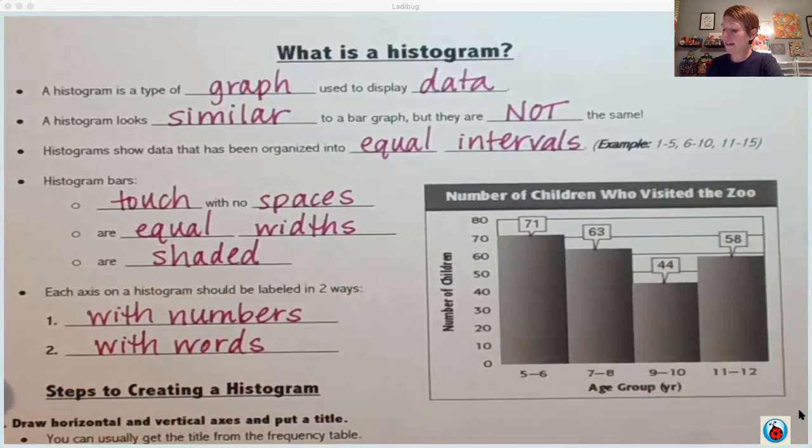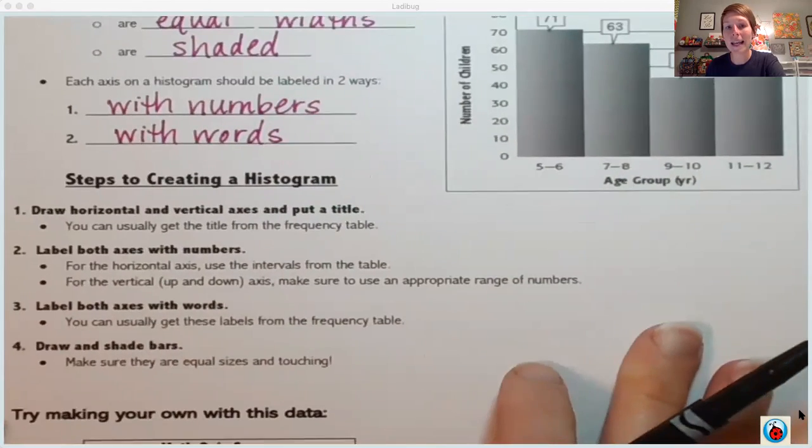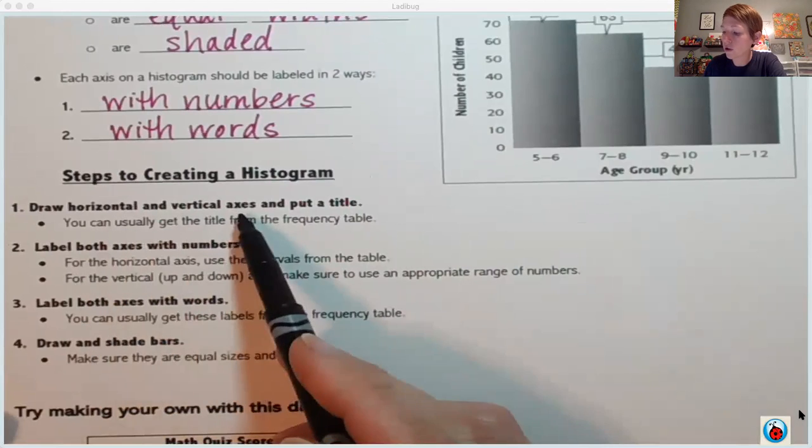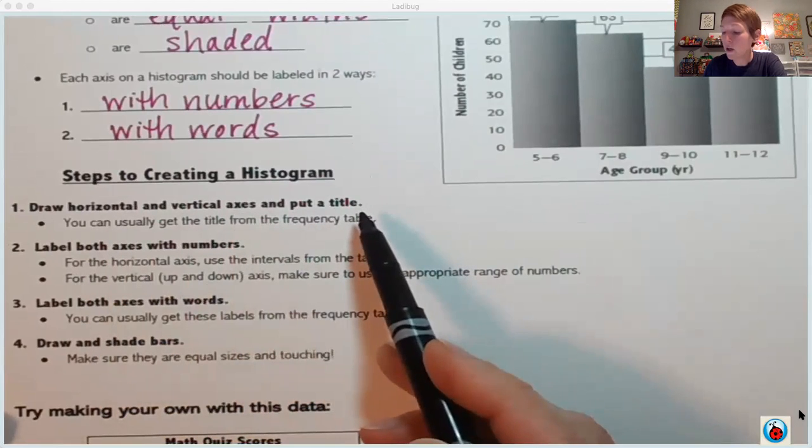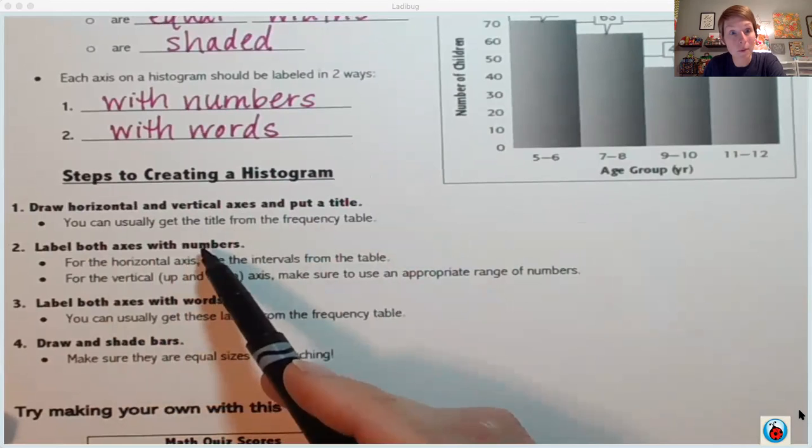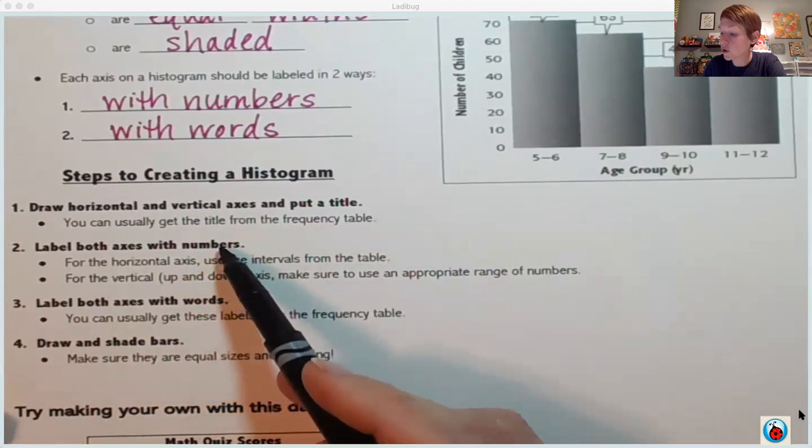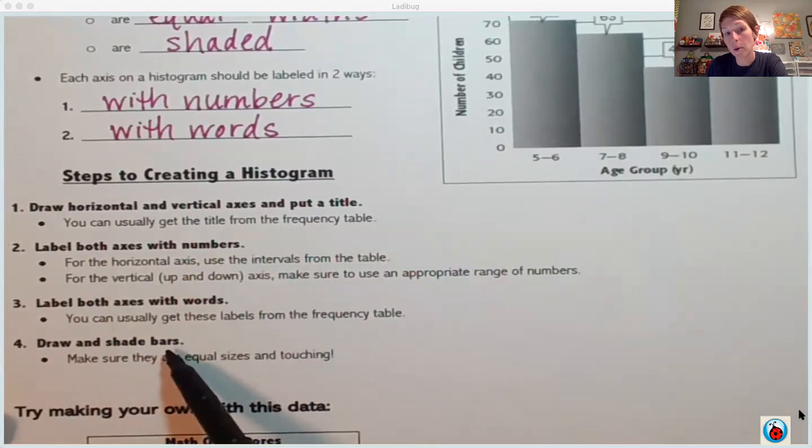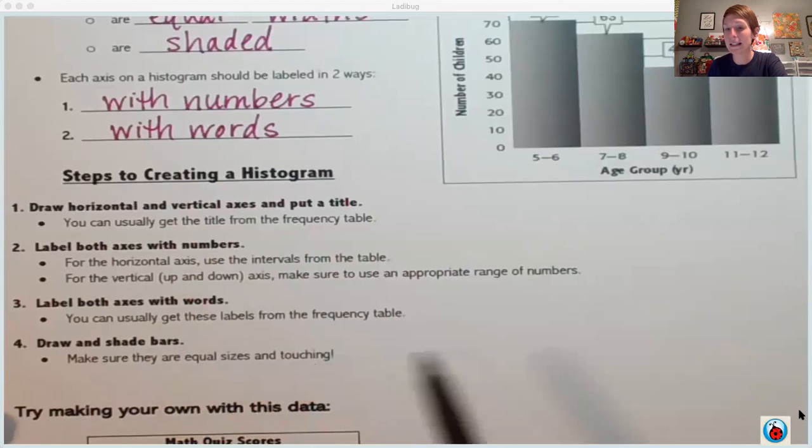Now down here at the bottom are the steps to creating a histogram. You draw your horizontal and vertical axes and put a title. You label your axes. Remember, label them in two ways. First is with numbers, the second is with words, and then draw and shade your bars making sure they are equal sizes and touching.